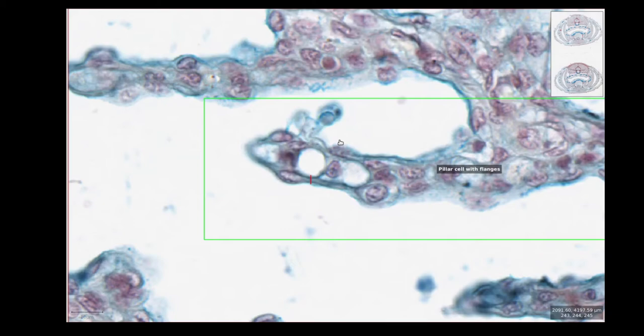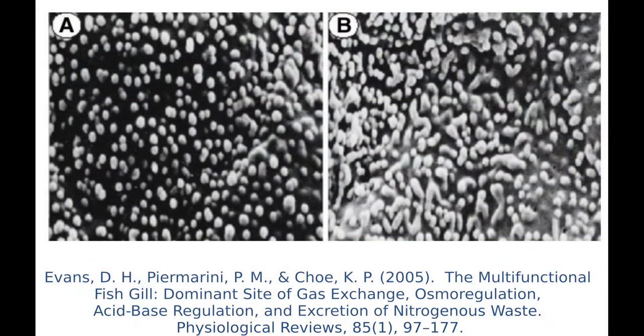Pavement cells have a protective function just like any other epithelium. Using an electron microscope, you can see the surface membrane forms tiny micro ridges. It's thought that these help to anchor mucus to the gills which protects against bacteria and other foreign material.